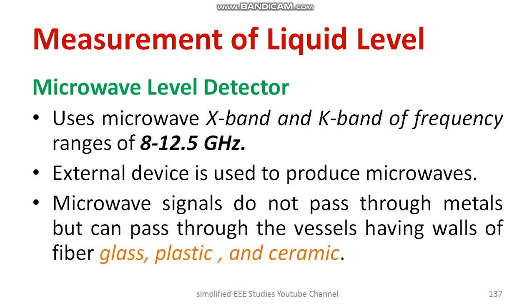Another method is the microwave level detector. Microwave in the X-band and K-band frequency range of 8 to 12.5 GHz is employed. There are different methods to generate microwaves, and an external device is used to produce them. Notably, microwave signals do not pass through metals, but they can pass through vessels made of fiber, glass, plastic, ceramic, etc.